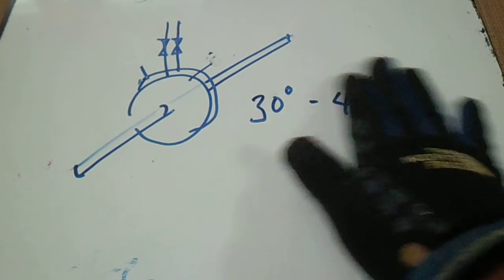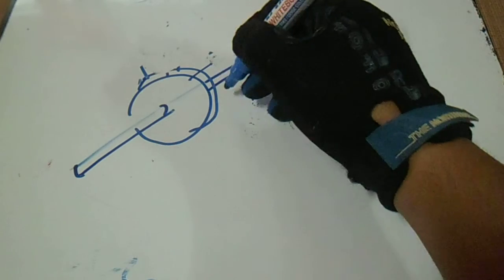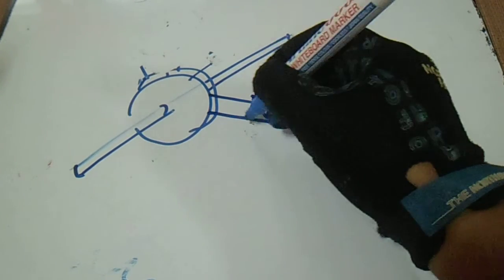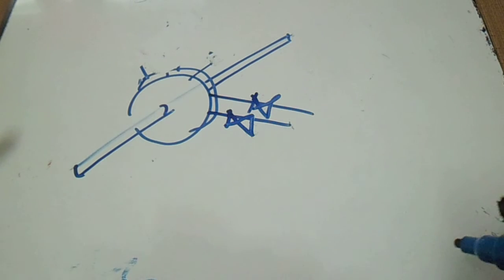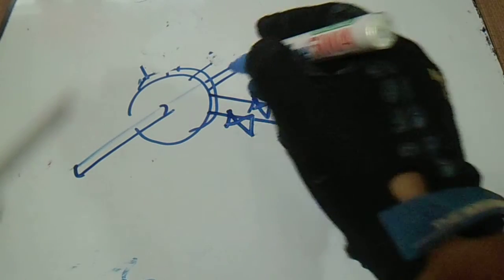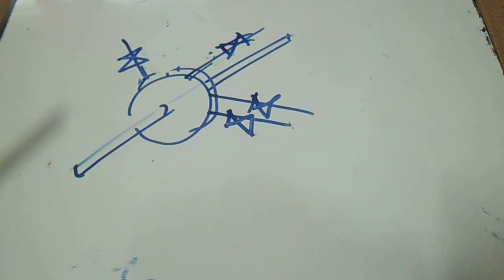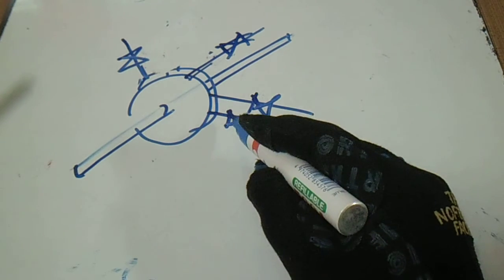Now we also have steam. The position for steam is from the side — this is the standard for steam. The alternative for steam is 30 to 45 degrees. This is the alternative, and this is the standard for steam.